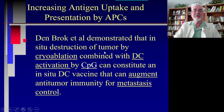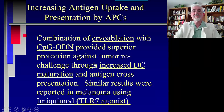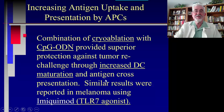Ben Brock demonstrated that cytodestruction of tumor by cryoablation combined with DC activation by CpG can constitute a cytodestine vaccine that can augment anti-tumor immunity for metastatic control. Separately, combination of cryo ablation with CpG-ODN provided superior protection against tumor rechallenge through increased DC maturation and antigen cross-presentation, though this model showed immune boosting rather than destruction of existing metastatic disease.